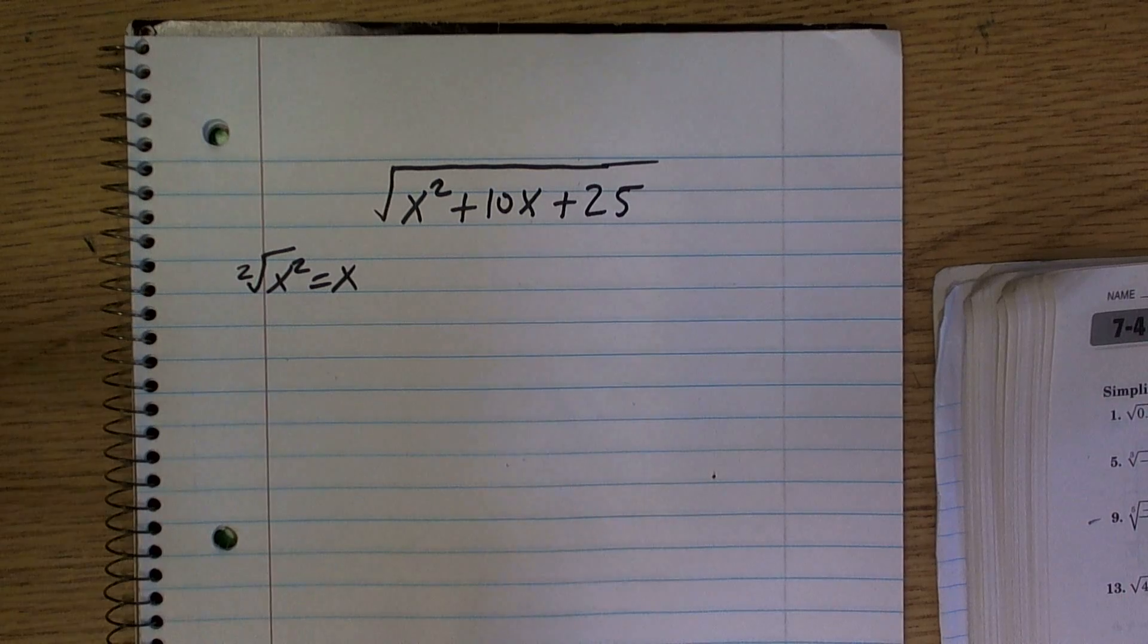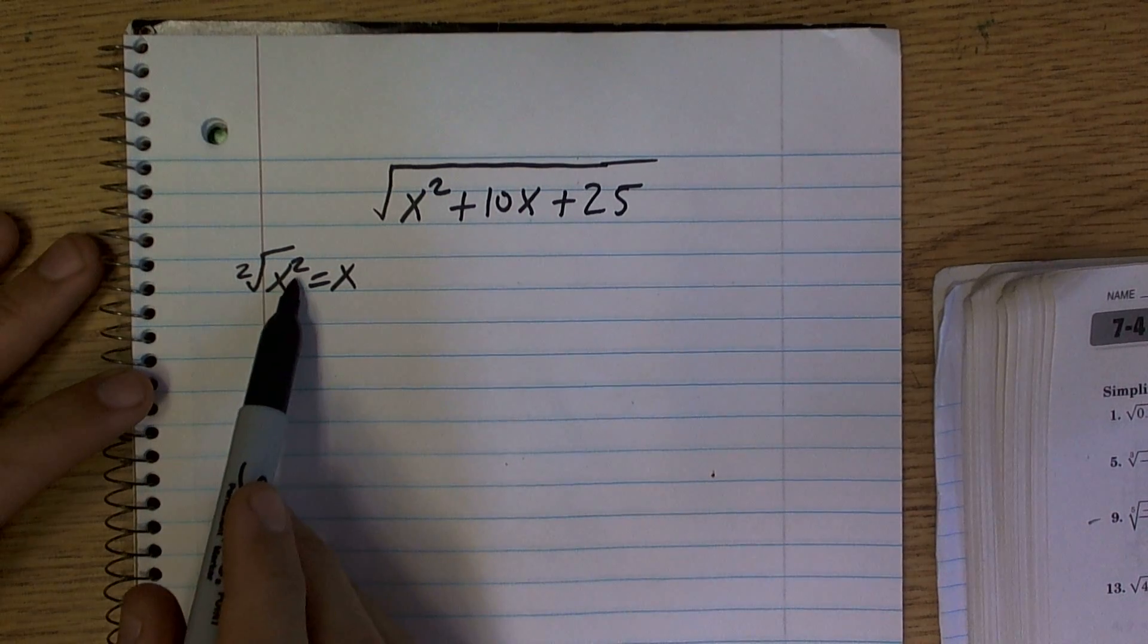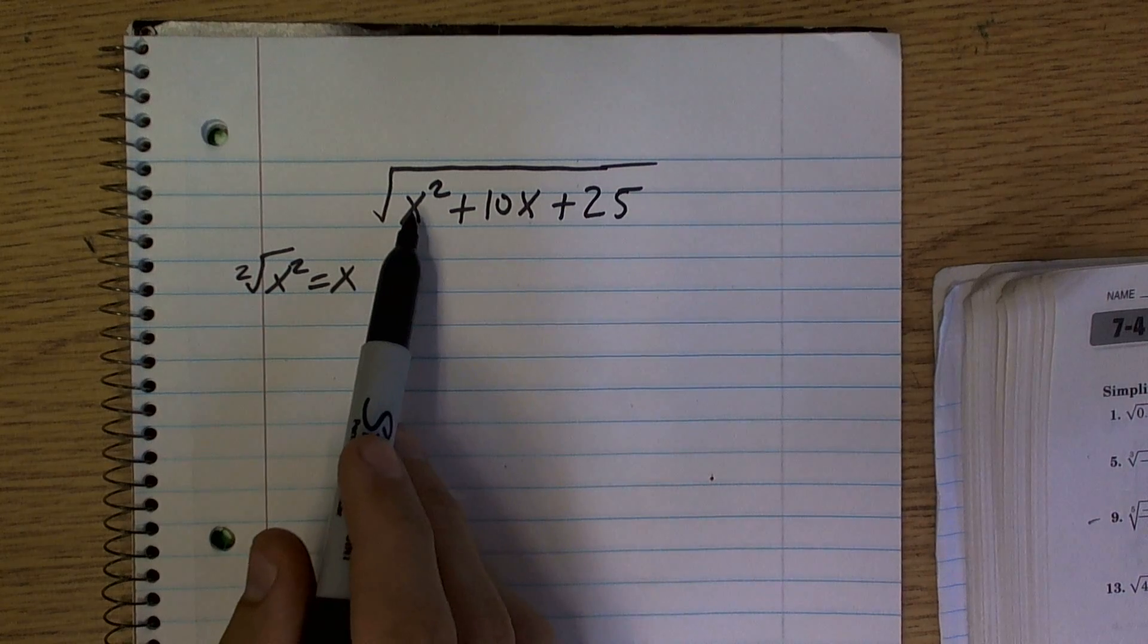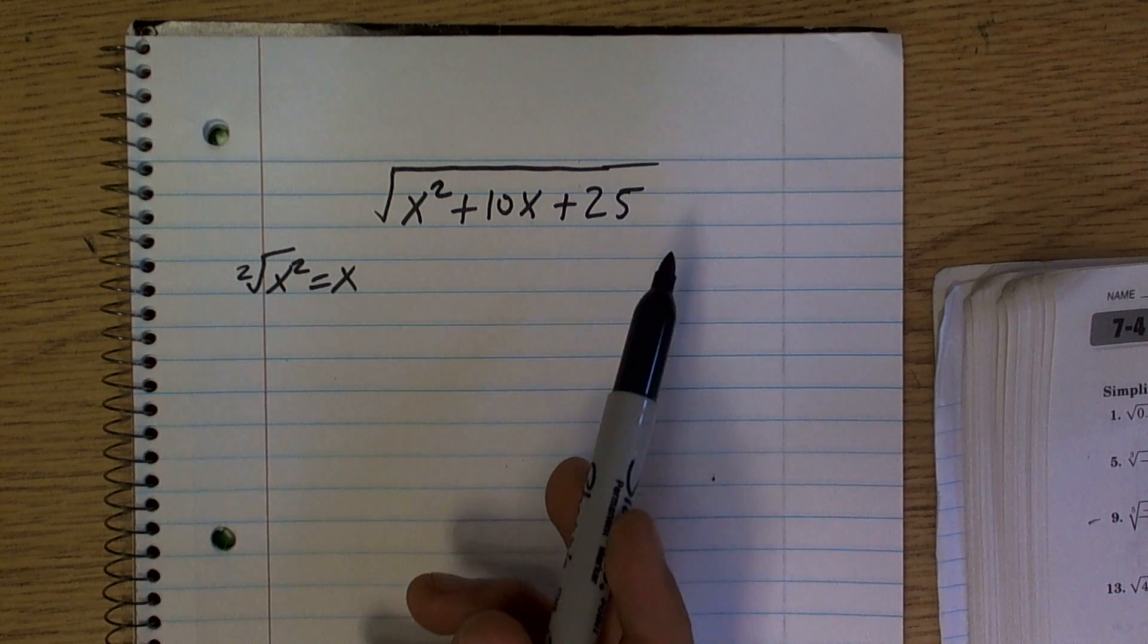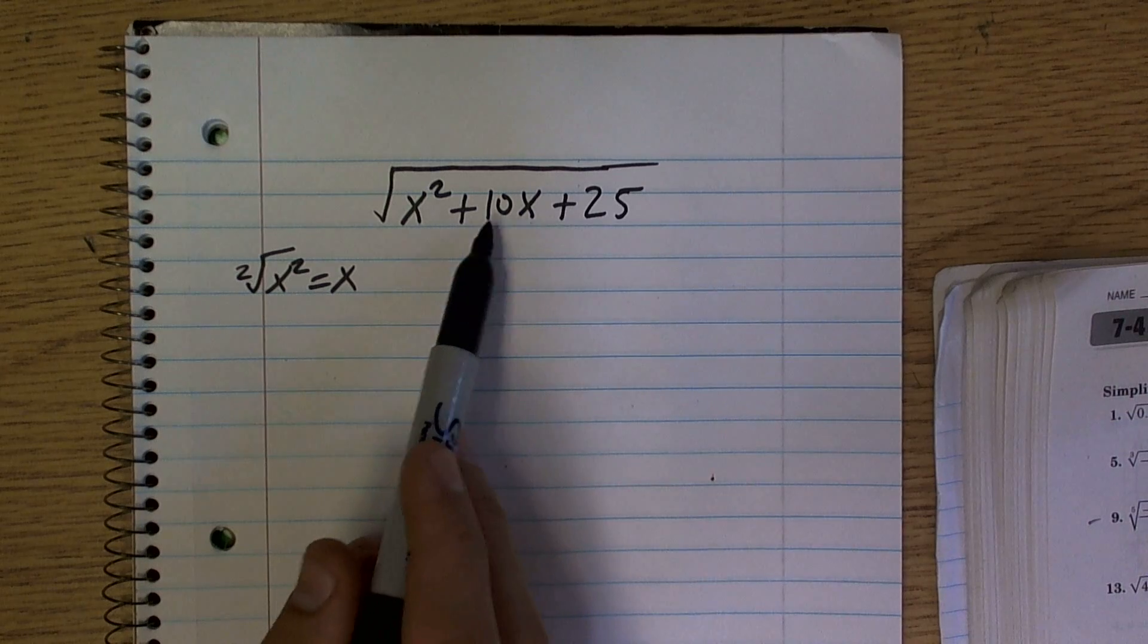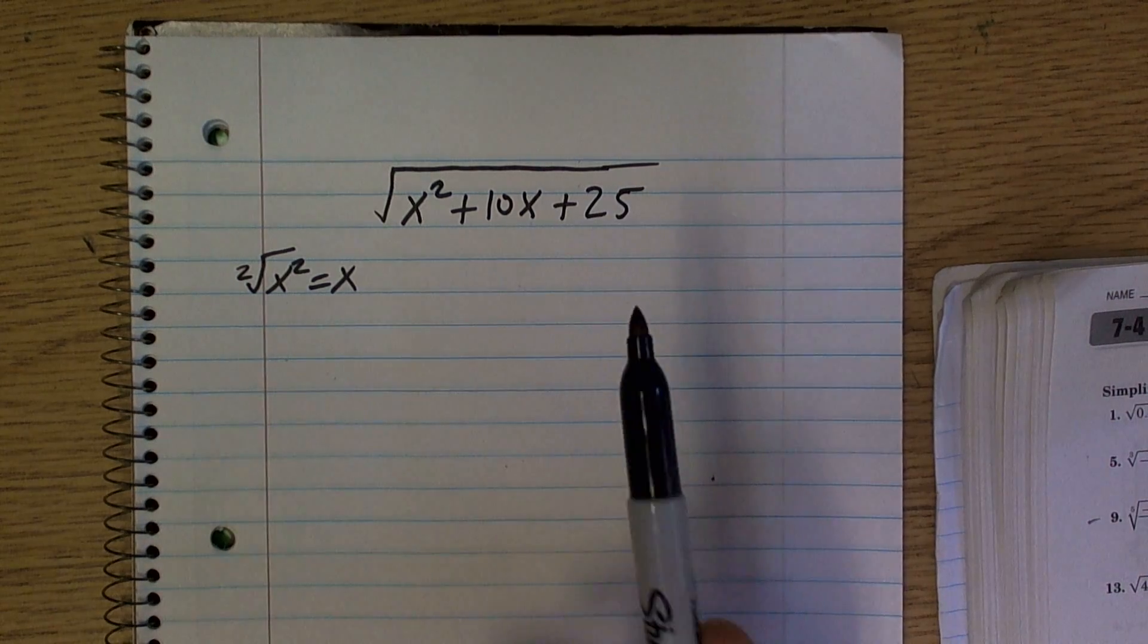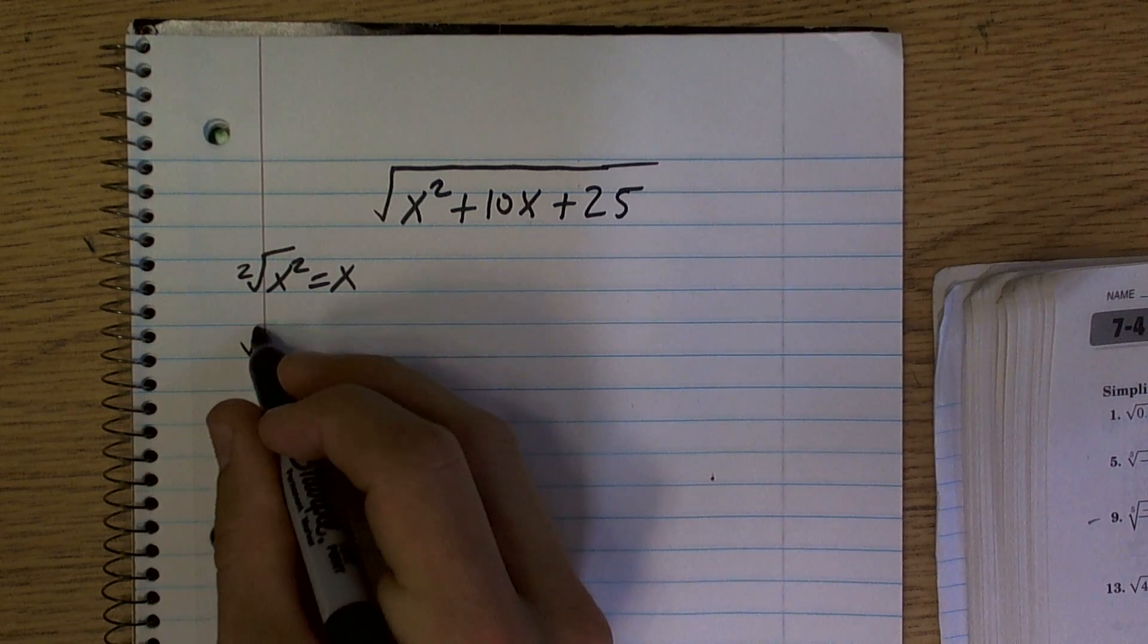So our main purpose is we need to get something into that squared form. We're good here, we got an x squared, but we don't have the 10x or the 25 in that form. We could write 5 squared for 25, but then we don't have the 10x.